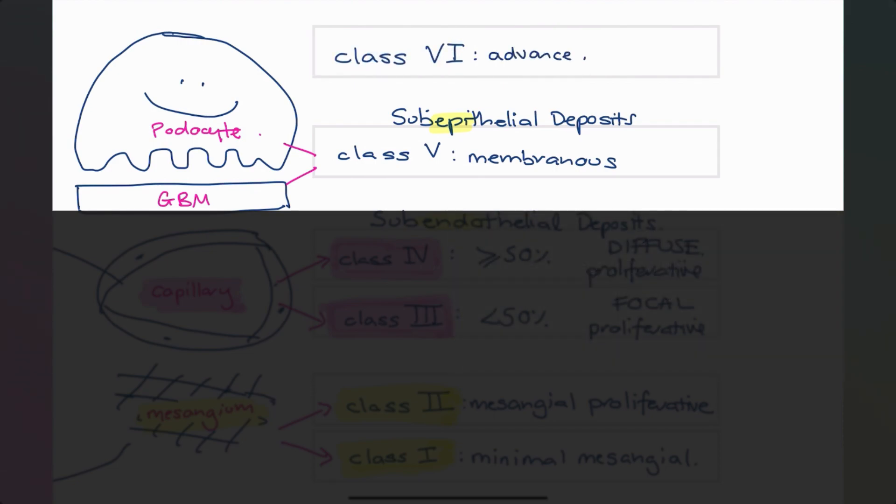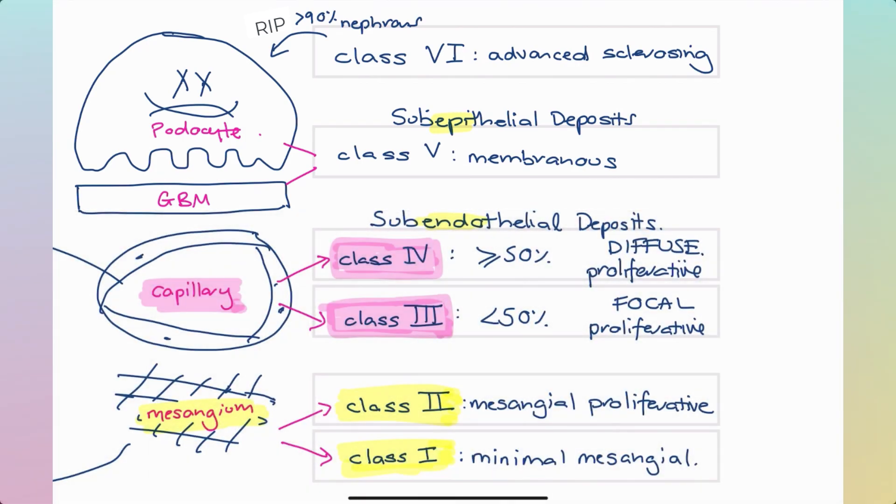And lastly, class six, advanced sclerosing lupus nephritis. This just means that there is greater than or equal to 90% global sclerosis and no active lupus. It's just burnt out disease. The damage is done, the kidney is scarred. And at that stage, it's really just supportive management. We do not immunosuppress these patients with class six lupus nephritis.